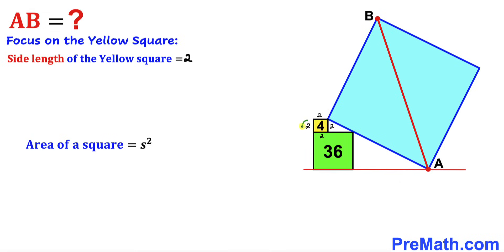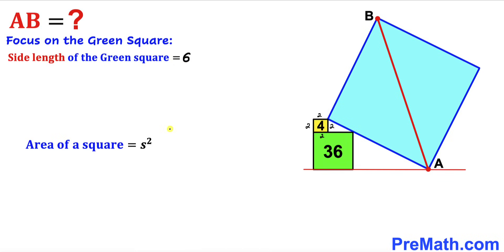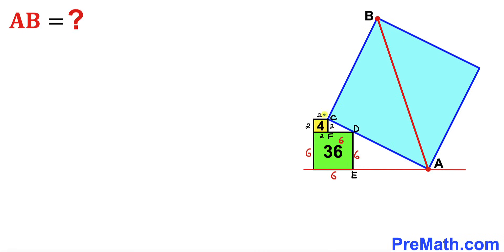As you can see, the side length of this yellow square is 2. Now let's focus on this green square whose area is 36, and once again we are going to apply the area of square formula. Therefore the side length of this green square turns out to be 6, since 6 squared gives us 36. The side length of this green square is 6 across the board.